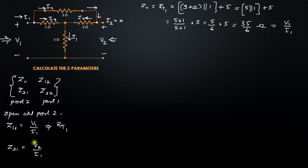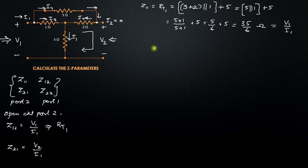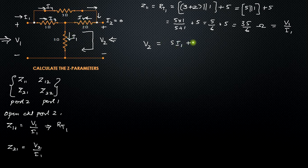Now let us calculate Z21, which is V2 divided by I1. We need to find the relation between V2 and I1. V2 is the voltage drop across the output terminals. Following this loop, we can write V2 equal to 5 times I1 plus 2 times I4. This equation gives the relation between V2 and I1, but we still have I4, which we need to eliminate by expressing I4 in terms of I1.